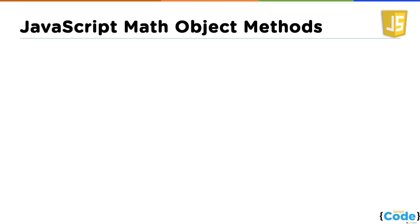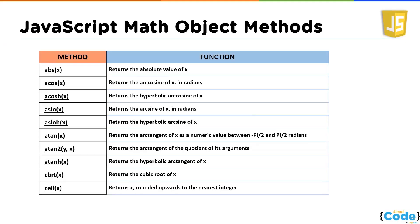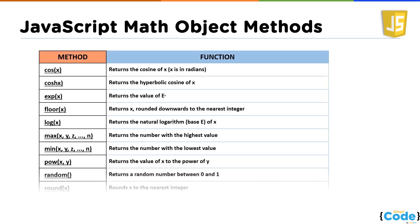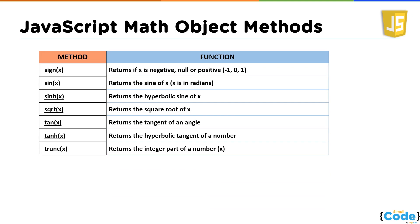So let's have a look at all the methods present in JavaScript. These are the methods we have — a list of methods with a variety of usage. You can pause the video and take a screenshot, or note them down if you want. These are all the methods we have in the Math object.